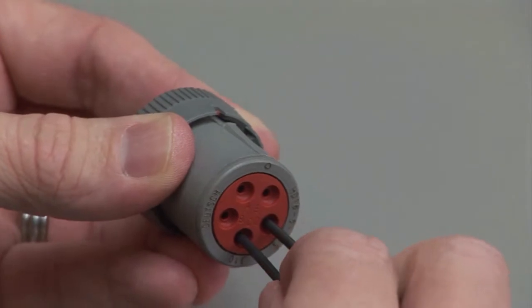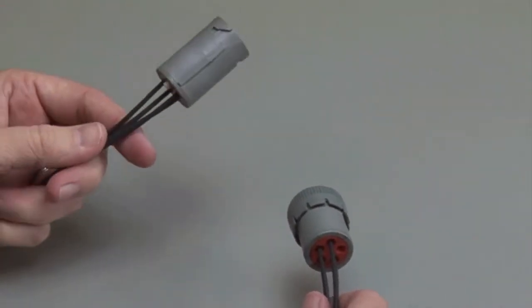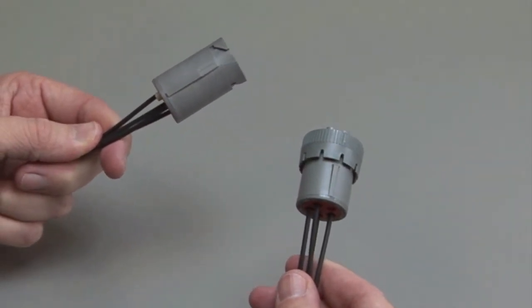Repeat this process until all of the cavities are filled. Repeat the same process for the receptacle and the plug halves of the connectors. Make sure to insert the contacts into the rear grommet.